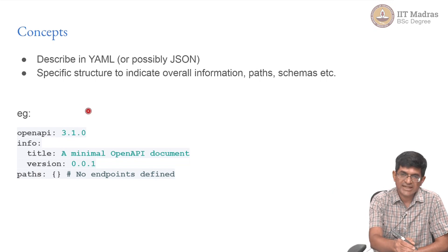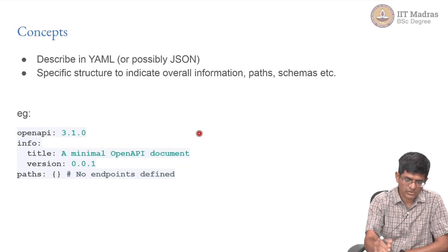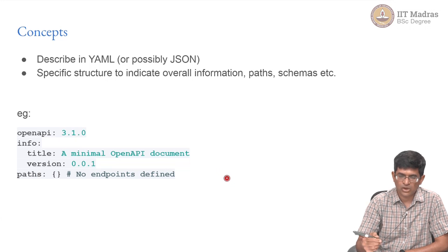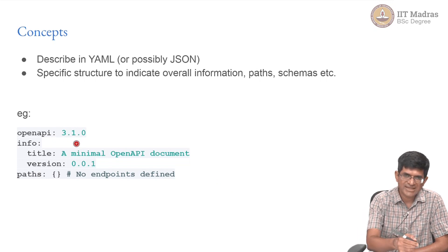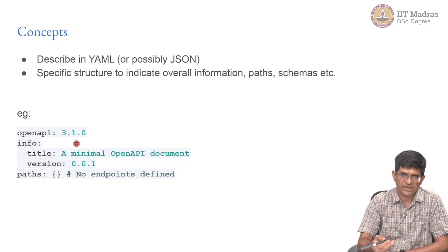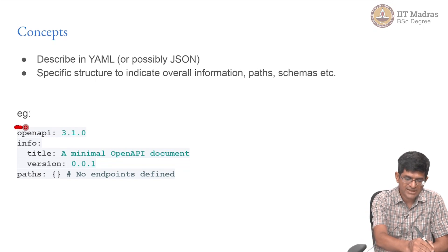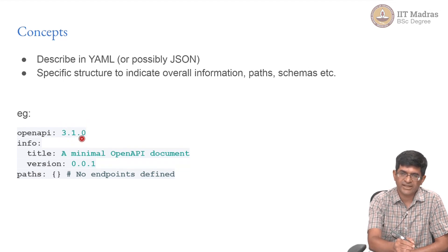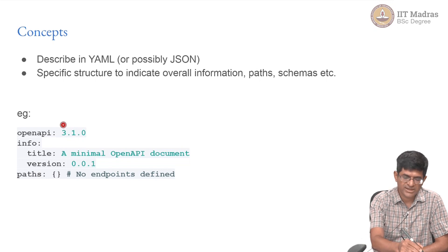The most trivial example is something like this — what I have over here is an example of a YAML file. The exact details of how YAML is implemented and how it is meant to be parsed I am not going to get into here. Broadly speaking, YAML is similar to the notion of keys and values found in JSON or in a dictionary. It has a key which says 'openapi' with the value 3.1.0, which is basically treated as a string that gives the version number.